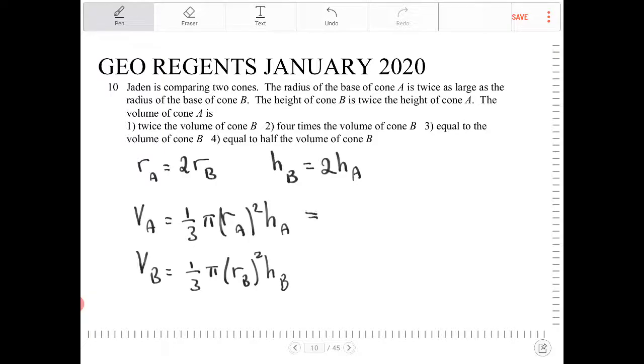I can then reinterpret this by substituting in the things I know. The volume of A is one-third pi. RA is 2RB. And I know that HA is equal to one-half of HB, which I can then substitute in here so that I can have an expression all in terms of the dimensions of cone B.